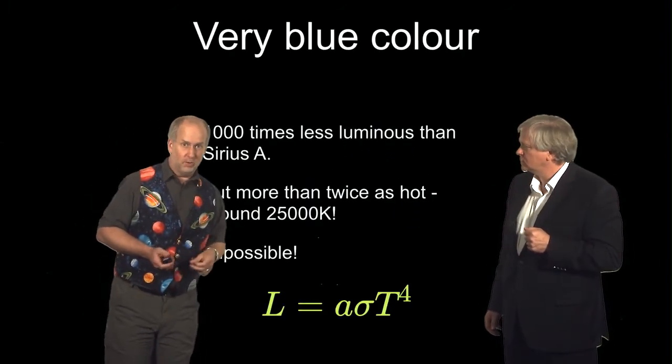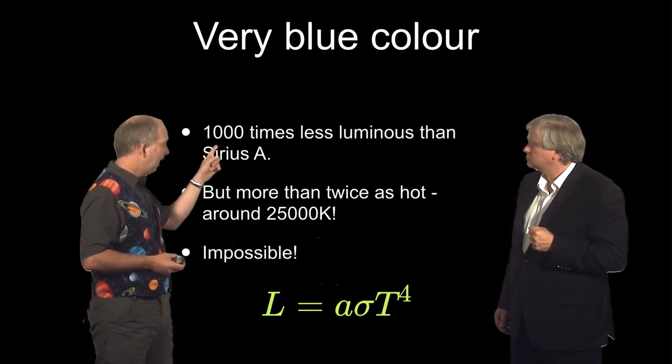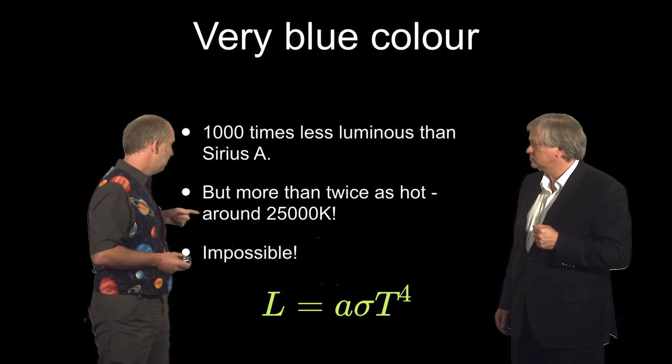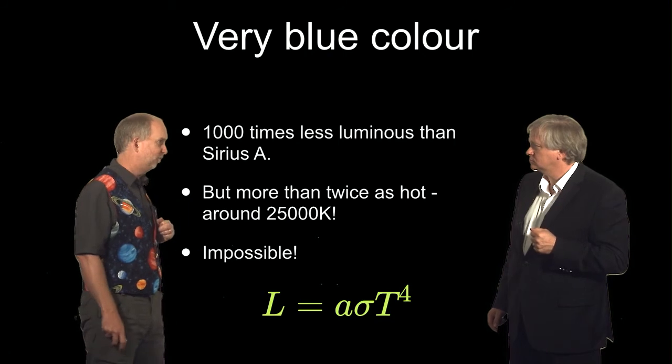But when you look at it, the spectrum, they found that in fact, far from being cool, it was hot, in fact hotter than Sirius A. So we knew it was a very blue colour, had the spectral features that indicate heat, so it's a thousand times less luminous than Sirius A, but had a surface temperature of about 25,000 degrees, but Sirius is only 10,000 degrees.